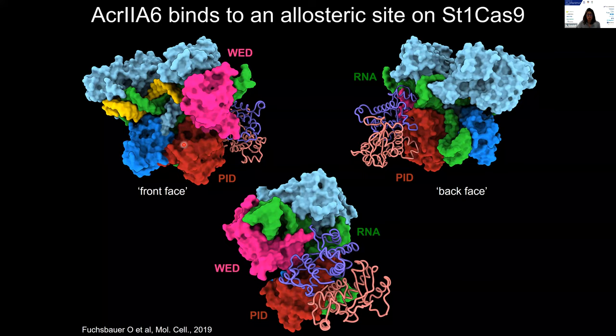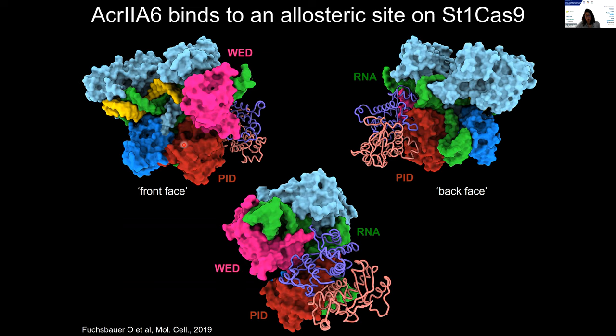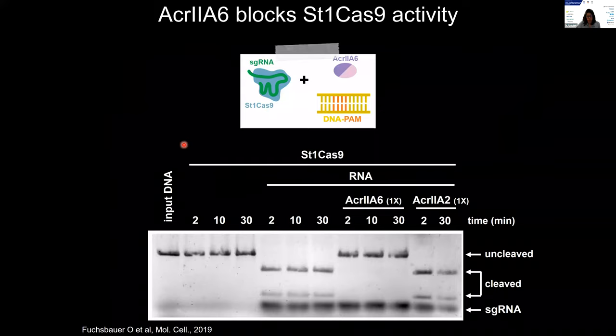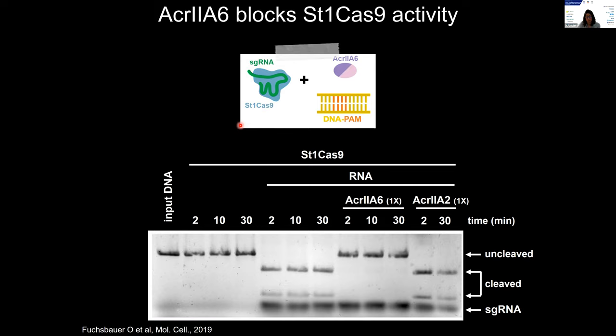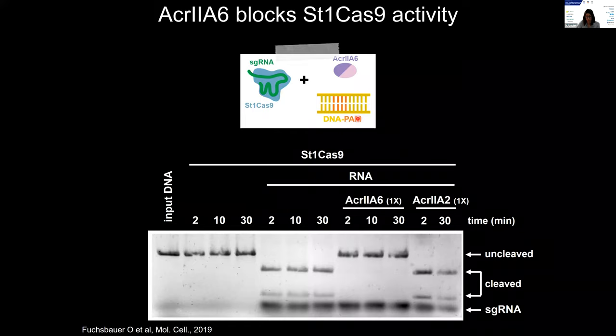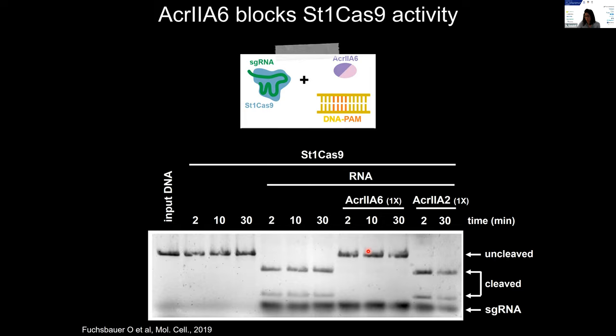From a structural point of view, ACA2A6 presents the characteristics of an allosteric inhibitory protein. We confirmed that ACA2A6 blocks Cas9 activity by setting up an in vitro DNA cleavage assay, in which we incubated the Cas9 surveillance complex plus ACA2A6 plus target DNA containing the PAM. In the absence of ACA2A6, Cas9 cleaves its target — it is active — while in the presence of ACA2A6, Cas9 activity is completely abolished. So ACA2A6 binds to an allosteric site on Cas9 and blocks its activity.